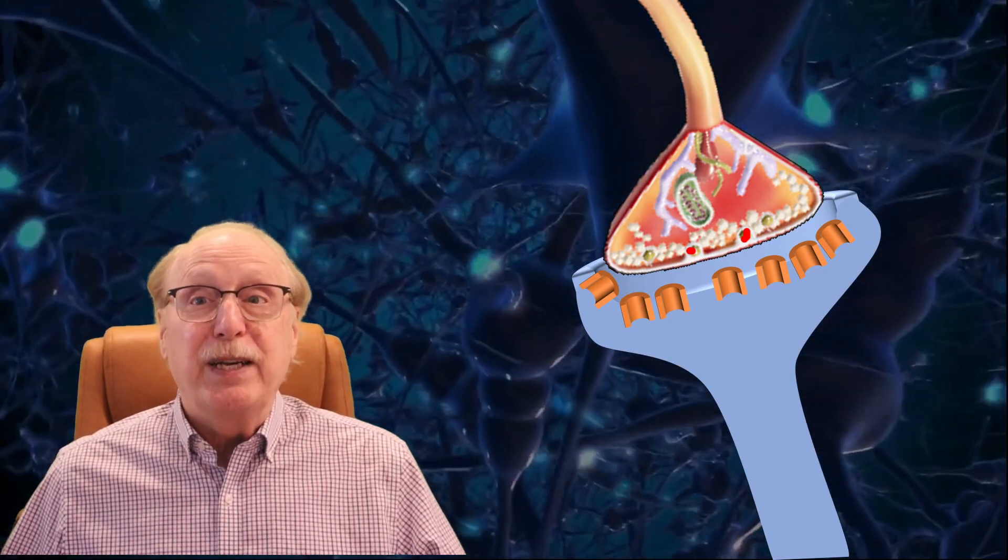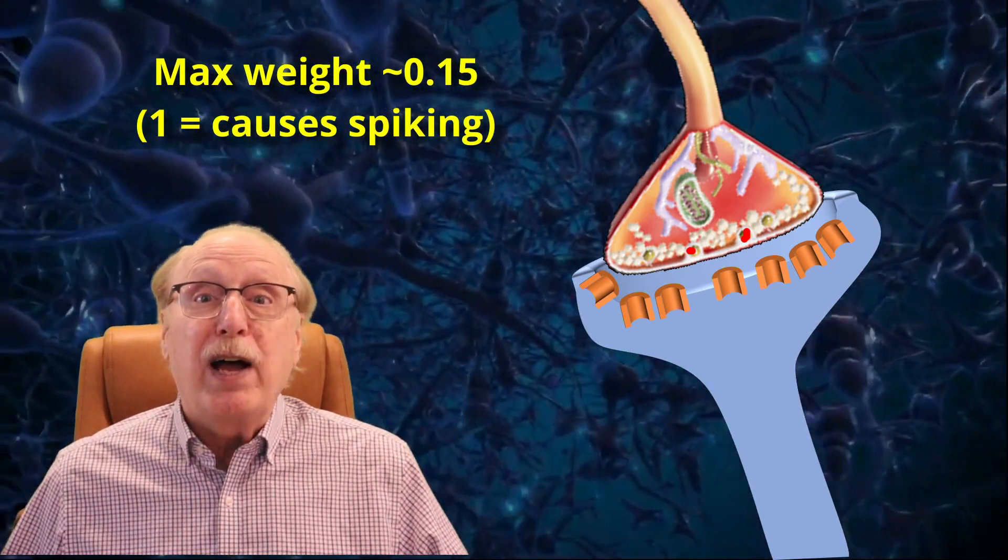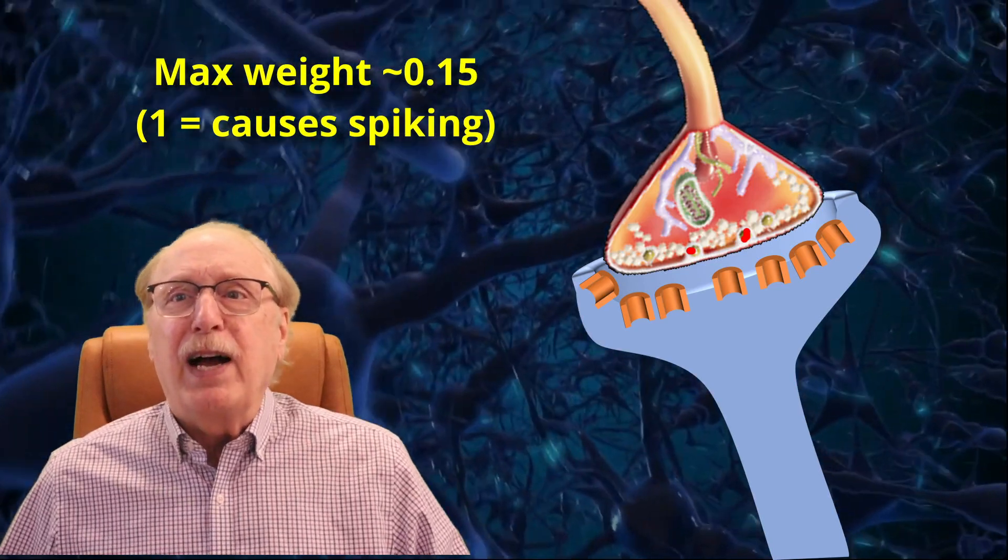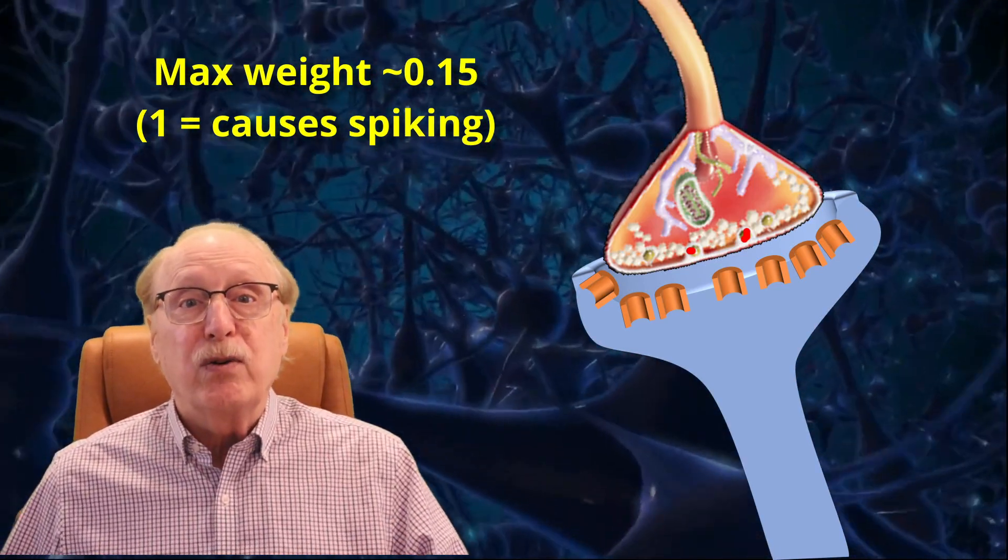The synapse weight is related to the number of gated ion channel proteins on the postsynaptic side of the synapse. We can assume that there is a physical size limit to the synapse itself, so there is also a limit to the number of ion channels which can be stuffed in. Experimentally, the maximum synapse weight observed is about 0.15, with 1 being defined as sufficient for a single source spike to cause the target neuron to fire.